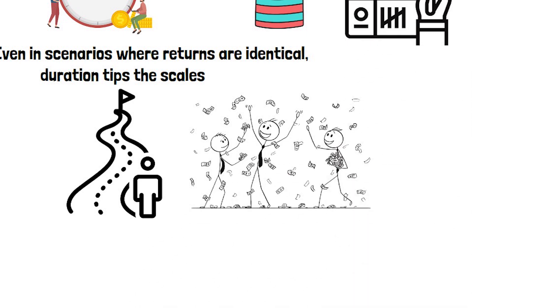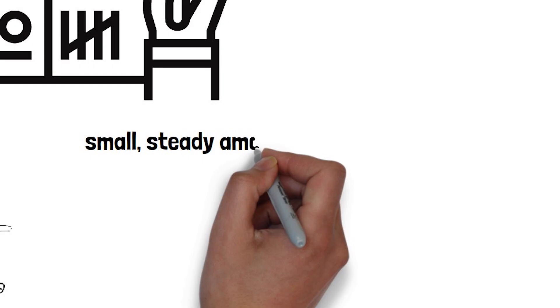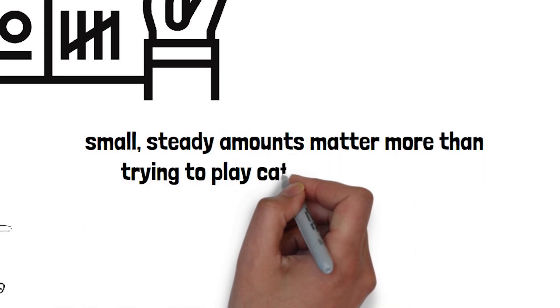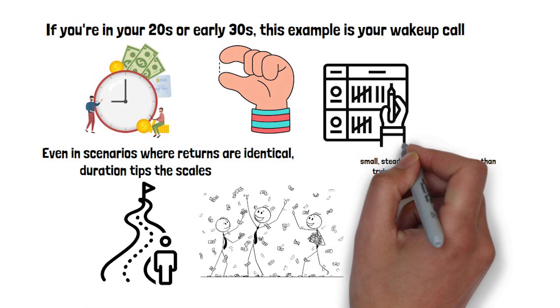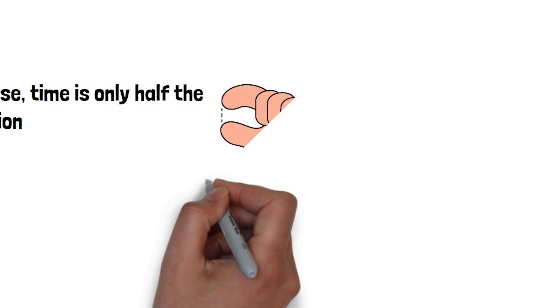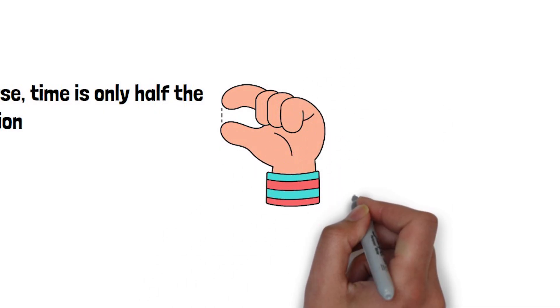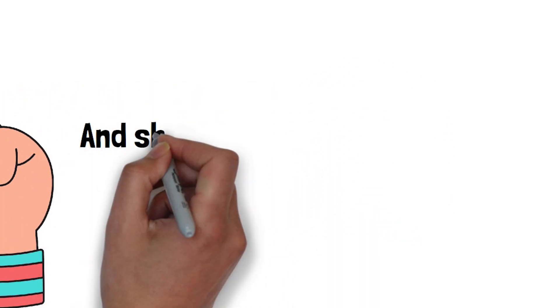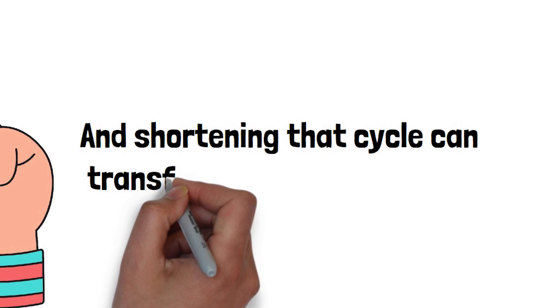So if you're 20-something, small, steady amounts matter more than trying to play catch-up later. The earlier you start, the more chances your money gets to multiply. Of course, time is only half the equation. The growth rate you achieve determines how short each doubling cycle is. And shortening that cycle can transform your results.